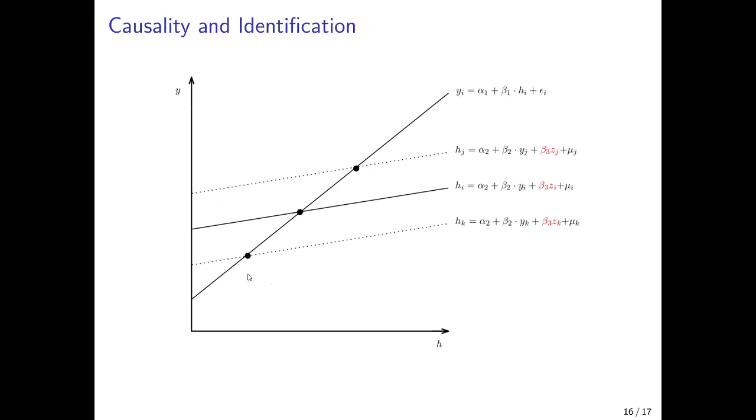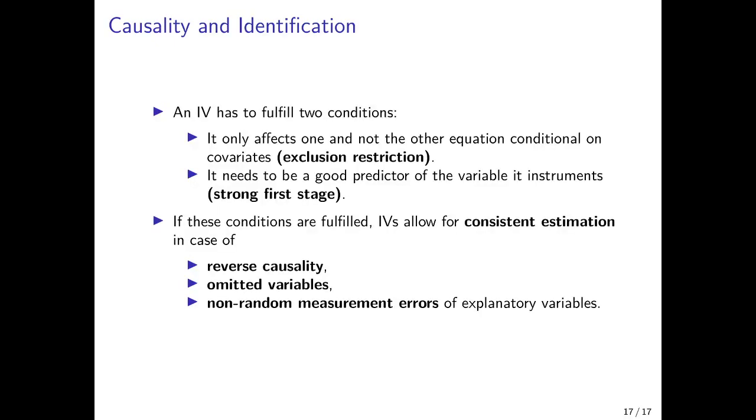Now we see already that all the data points would be aligned somewhere here along this line so that the regression of income on health with these data points would allow us to identify this curve here and estimate the parameter beta 1.